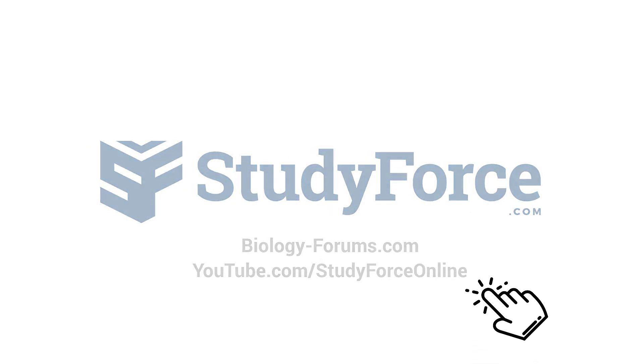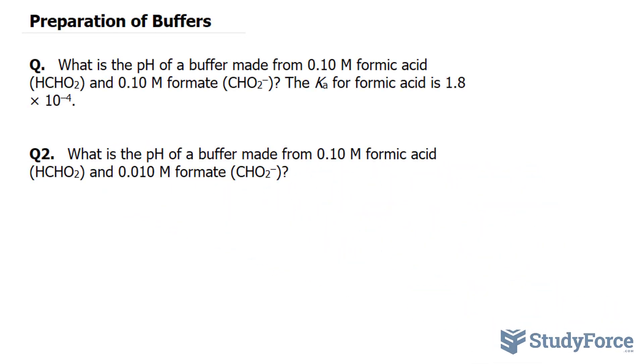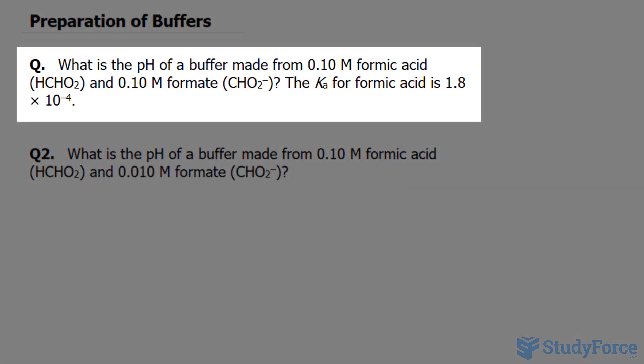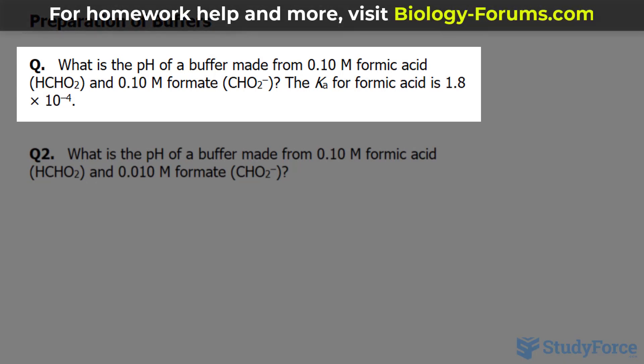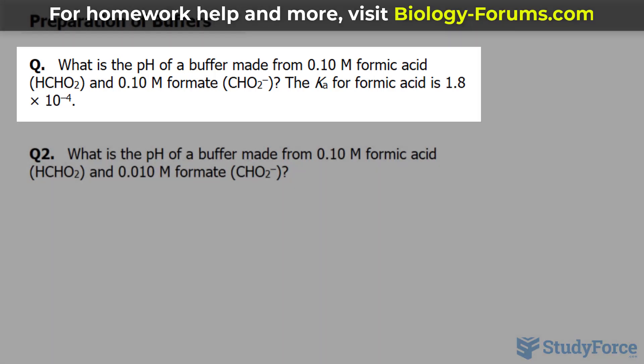In this lesson, I'll show you calculations on preparations of buffers. The question reads, what is the pH of a buffer made from 0.10 molar formic acid and 0.10 molar formate? The dissociation constant for formic acid is 1.8 times 10 to the power of negative 4.